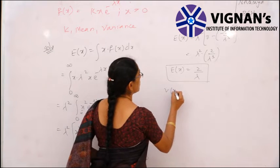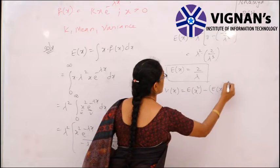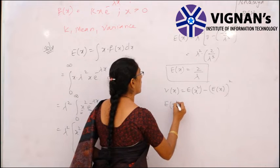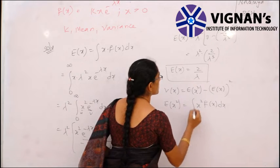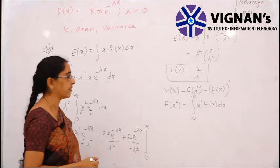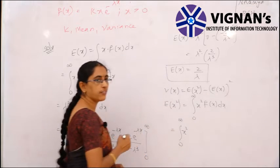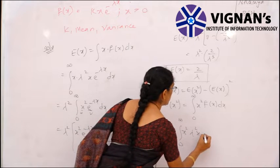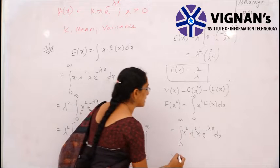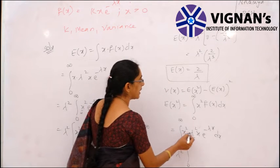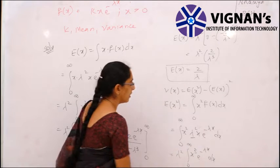Next find the variance. Variance = E[X²] − (E[X])². For a continuous random variable, E[X²] = ∫₀^∞ x²·f(x)dx = ∫₀^∞ x²·λ²·x·e^(-λx)dx. Bringing λ² outside: λ²·∫₀^∞ x³·e^(-λx)dx.